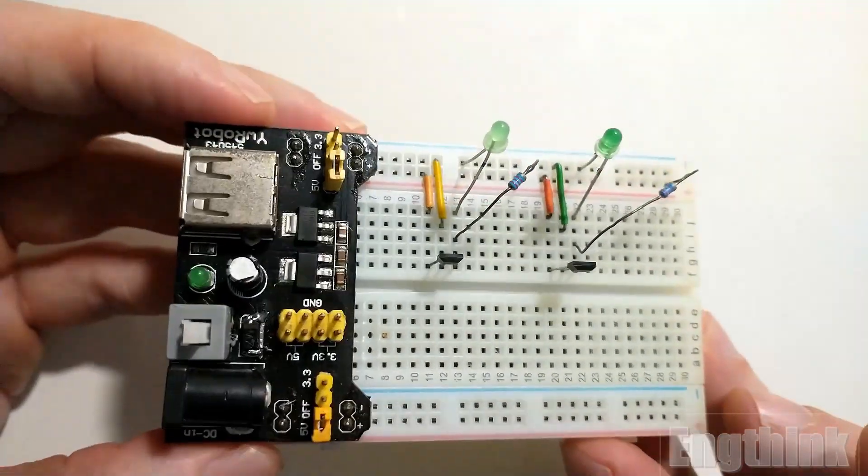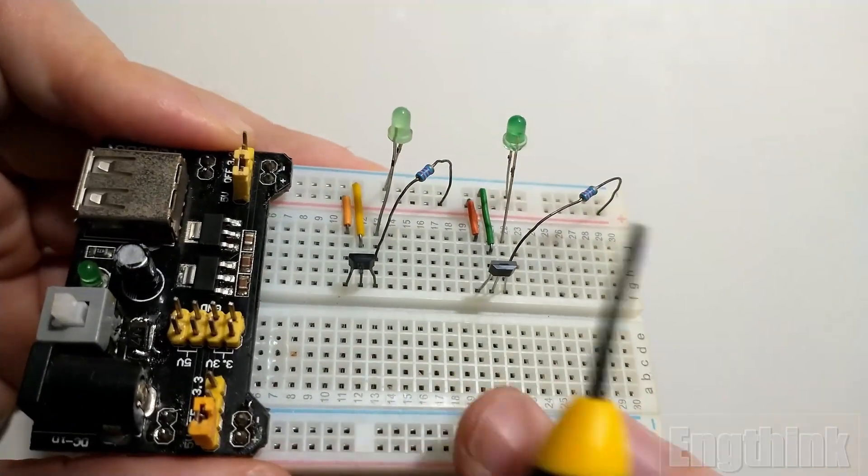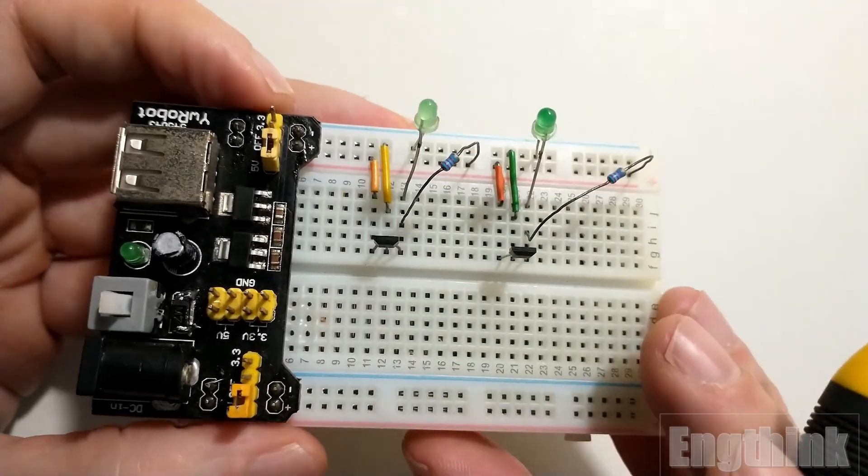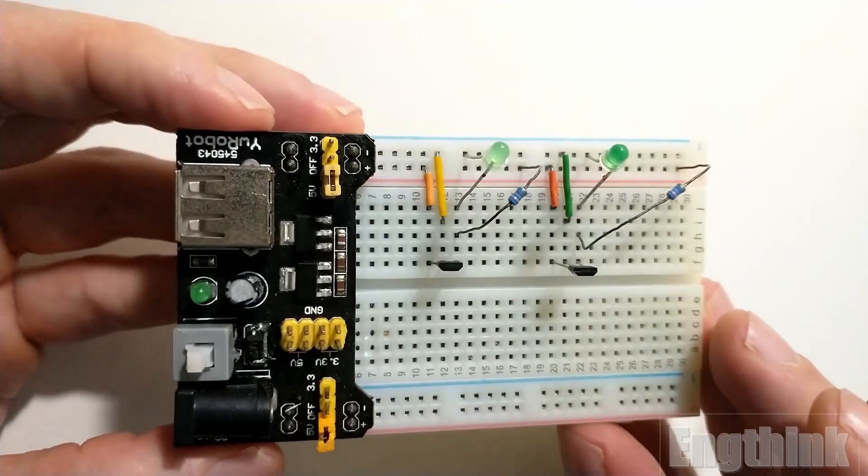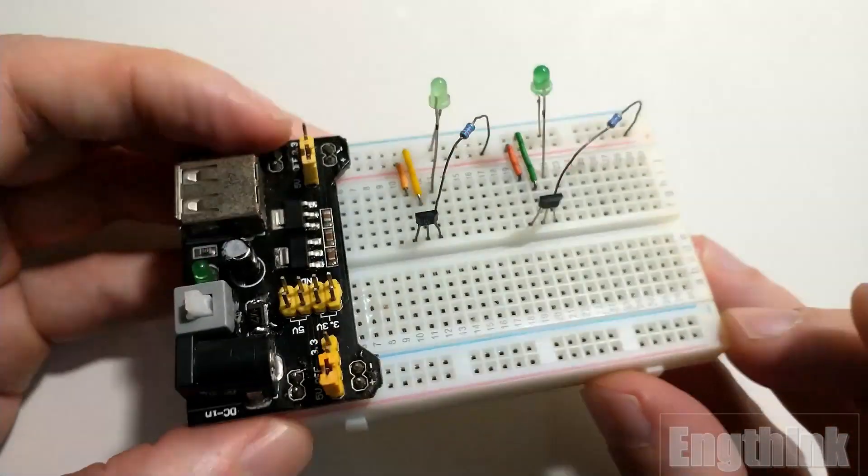The resistor is necessary even if you don't have the LED, because according to the data sheet of the manufacturer, both Hall effect sensors have open collector output, and for this reason a pull-up resistor is necessary in the output.